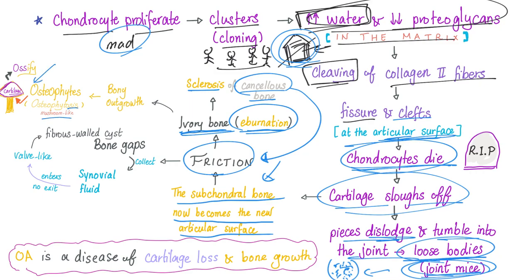Ivory bone leads to bony overgrowth causing osteophytes, also known as osteophytosis. They look like a mushroom — the mushroom cap is cartilage that then ossifies into bone. Friction leads to bone gaps. Synovial fluid collects in these gaps, enters but doesn't exit — a valve-like mechanism — resulting in fibrous-walled cysts.